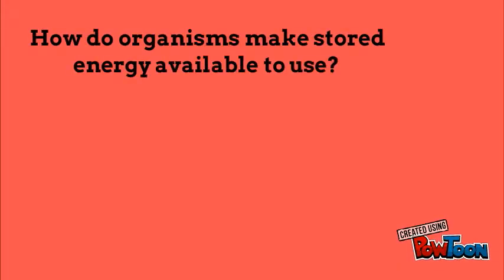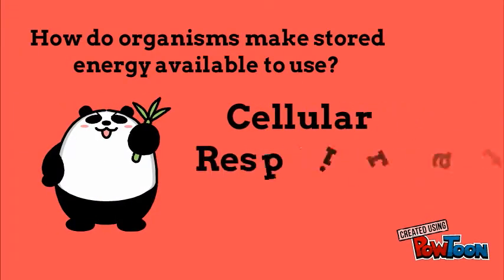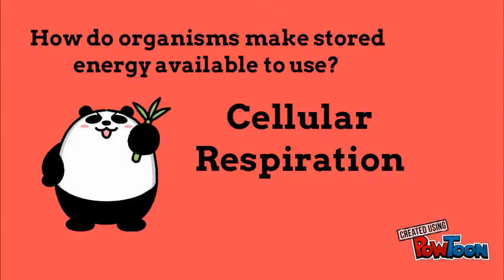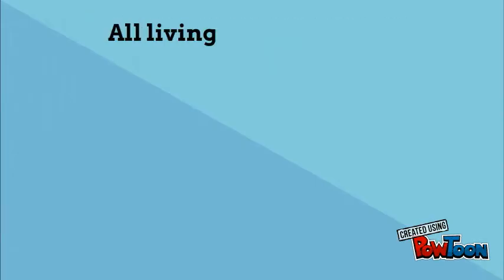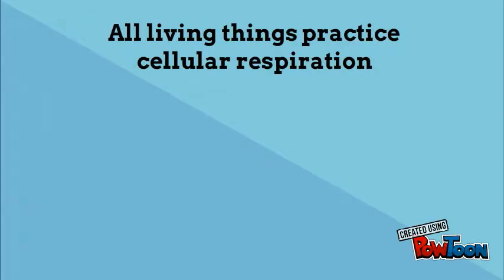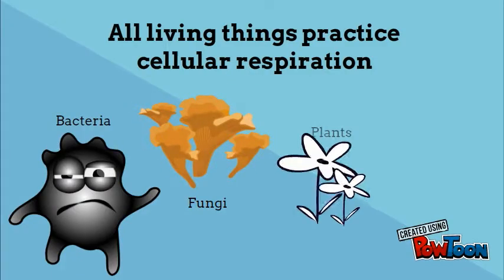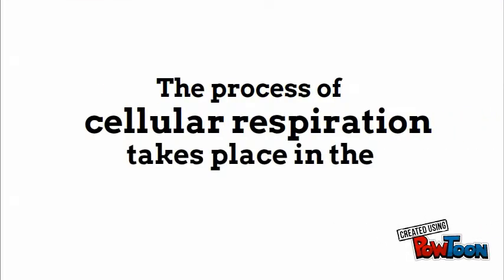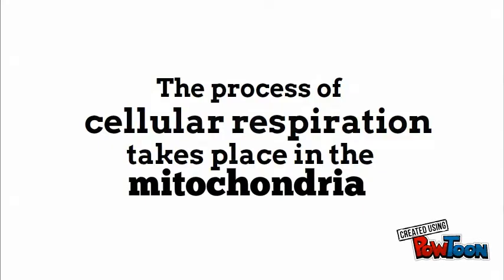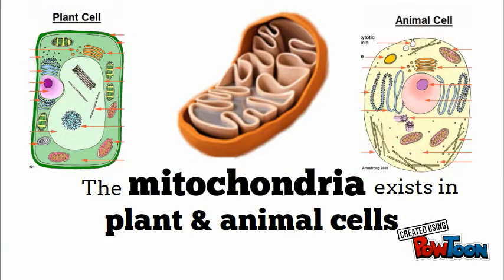The next question is how organisms can access this stored chemical energy. They do this through a process called cellular respiration. While only plants and producers can carry out photosynthesis, all living things can perform cellular respiration, including bacteria, fungi, plants, and animals. The process takes place in the mitochondria, which exists in both plant and animal cells, meaning both producers and consumers can carry out cellular respiration.